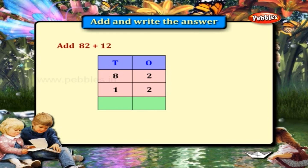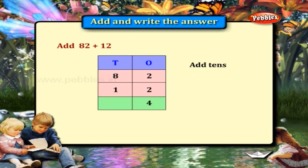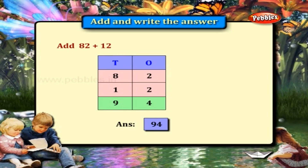82 plus 12. Add the 1's place: 2 plus 2 is equal to 4. Add the 10's place: 8 plus 1 is equal to 9. Answer: 94.